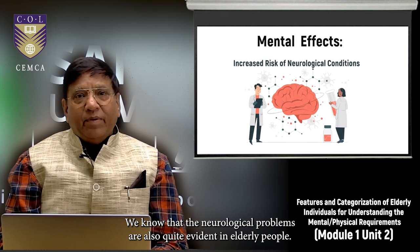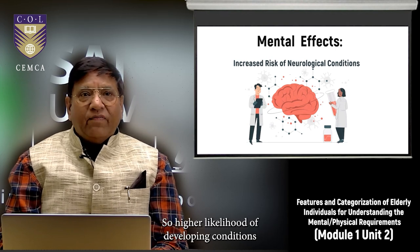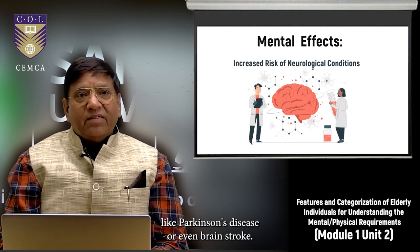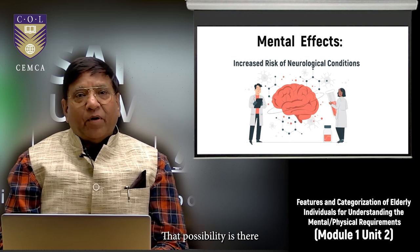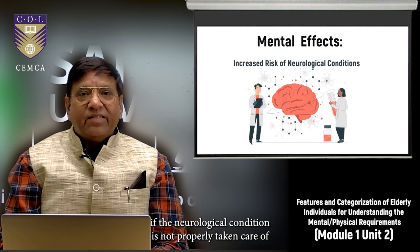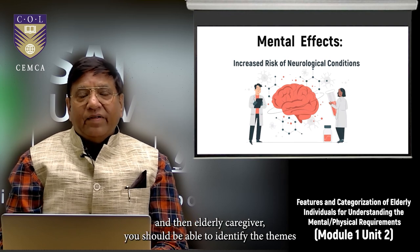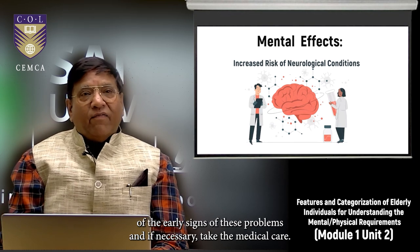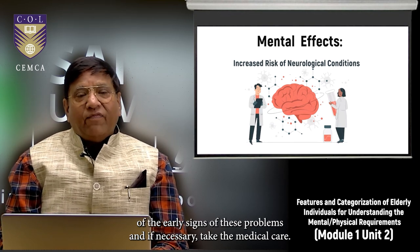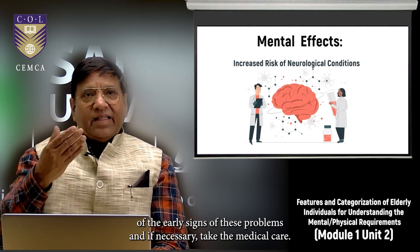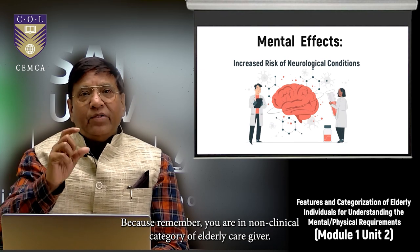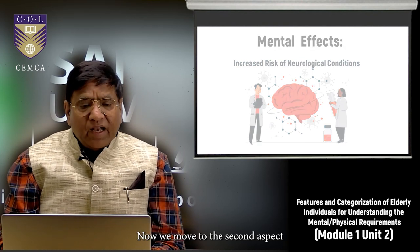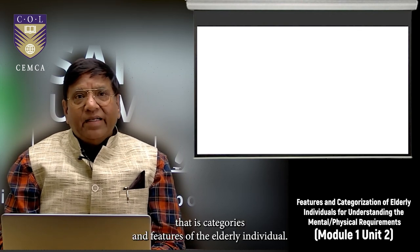Increased risk of neurological conditions is also evident in elderly people — a higher likelihood of developing conditions like Parkinson's disease or brain stroke. As an elderly caregiver, you should identify early signs of these problems and seek medical care when necessary, remembering that you are a non-clinical category of caregiver.